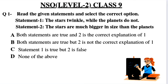Statement one is correct — stars twinkle while planets do not, because stars are at a much greater distance from Earth. However, statement two says stars are bigger in size than planets, but that is not the reason why stars twinkle. The size is not the cause of twinkling. So statement two is wrong. Therefore, option C — statement one is true but statement two is false — is the right answer.